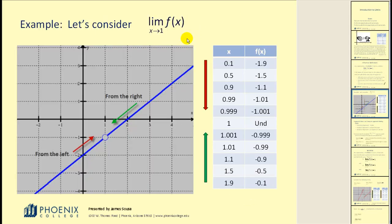Let's take a look at a limit: the limit of f of x as x approaches positive one. We have the graph and a table of values. One thing that might help is to draw a vertical line through x equals one, so you can see where we're approaching. We'll be approaching this vertical line — or think of it as a wall — from both the left side and the right side, and determine if we're approaching the same value. It's important to note that this function is not even defined at x equals one, but it may have a limit there. Graphically, as we approach x equals one from the left side, it looks like the y values are approaching negative one.